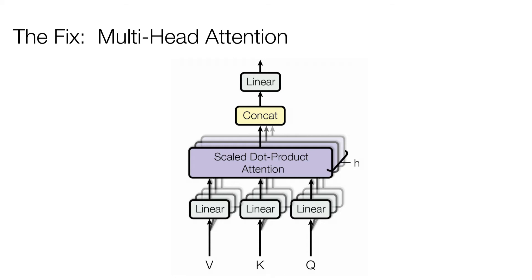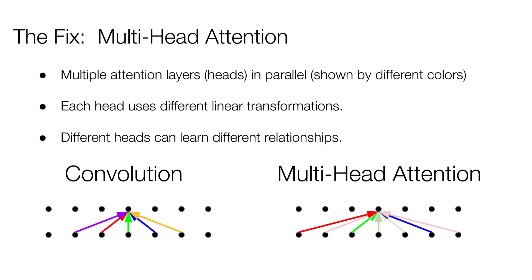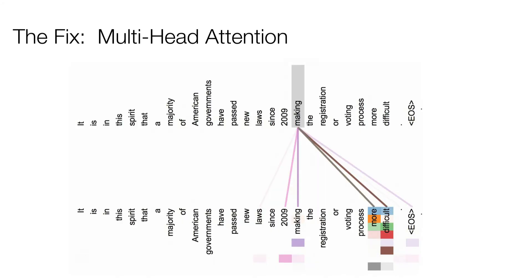To give intuition: here is a real visualization of attention over a sentence, where different colors are different heads. This example has eight heads. Where the color is white, it's not attending; where it's dark, it's attending. One head looks at '2009 and more,' while others look at 'difficult,' and one looks at 'making.' So the heads retrieve things from different parts of the sentence.